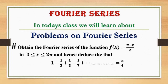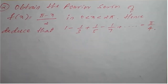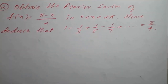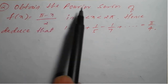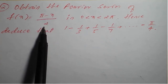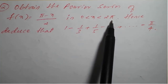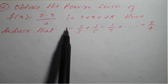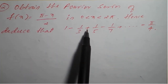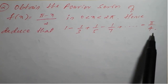The solution of this problem we will see now. Obtain the Fourier series of f(x) = (π - x)/2 in 0 < x < 2π. Hence, deduce that 1 - 1/3 + 1/5 - 1/7 + ... = π/4.